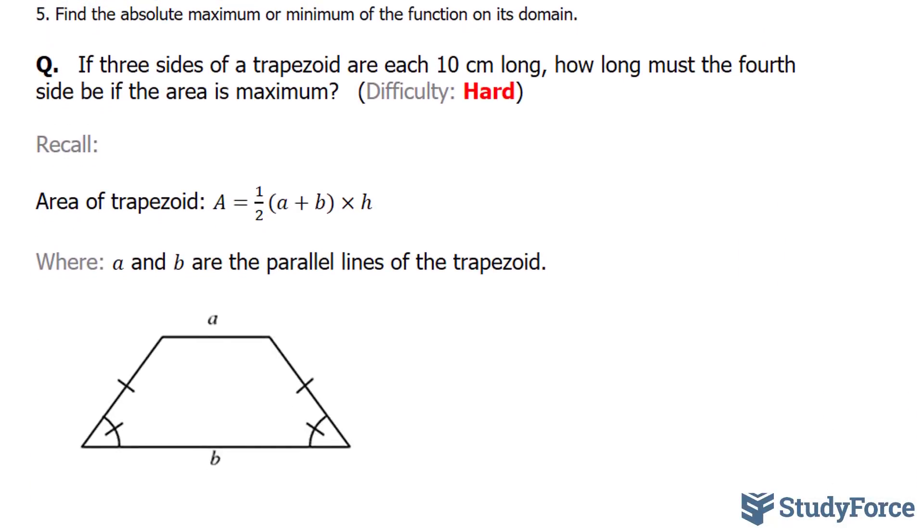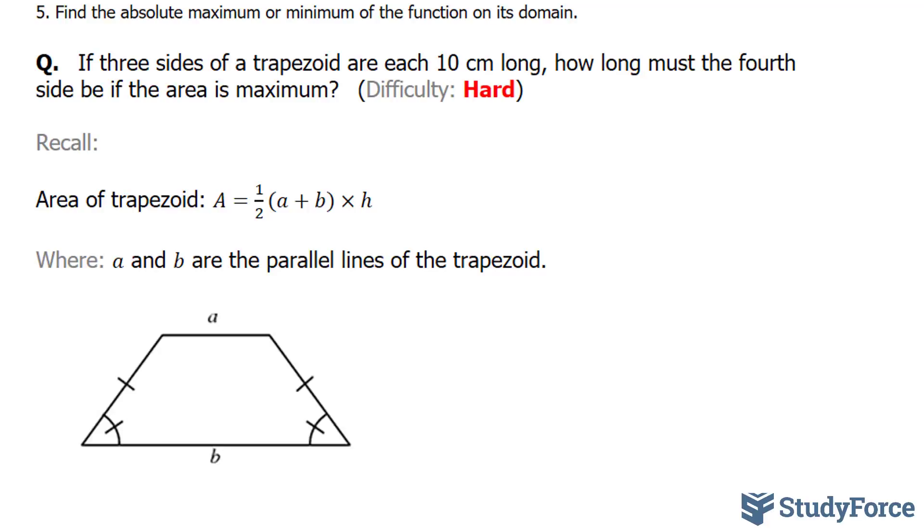Now recall, a trapezoid looks something like this, where you have two sides that are parallel. In our case, a and b are parallel, and the other two sides can be any length. The trapezoid shown here specifically is referred to as an isosceles trapezoid, which means three of the sides are equal and that last side is not.